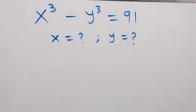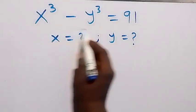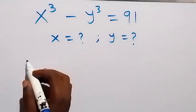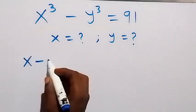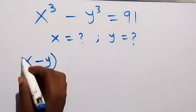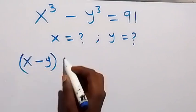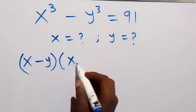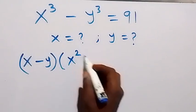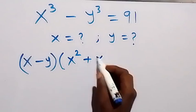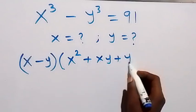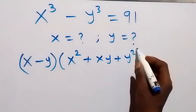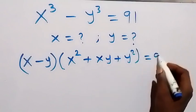To find the value of x and y, from this identity we can write that as x minus y, multiplied by x squared plus xy plus y squared, which is equal to 91.